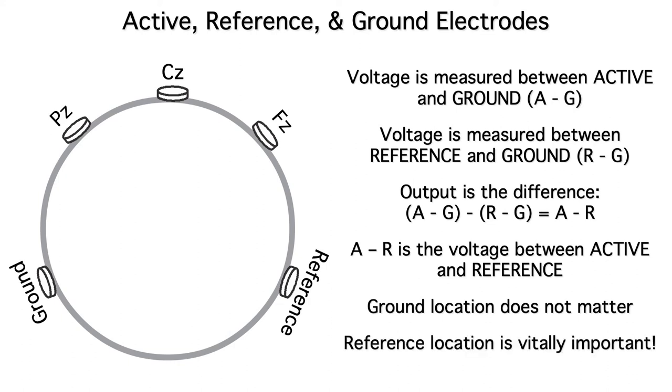The second implication is that the location of the reference matters a lot. Because our signal is effectively the active minus the reference, any activity at the reference electrode appears in our signal, but inverted because of the subtraction.